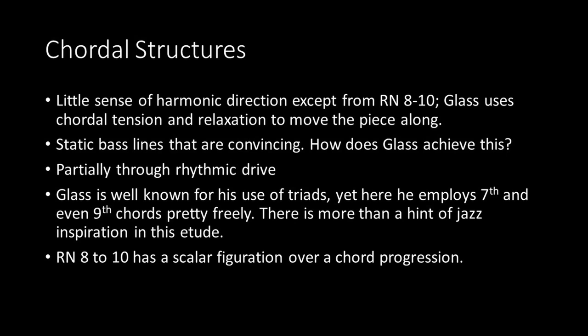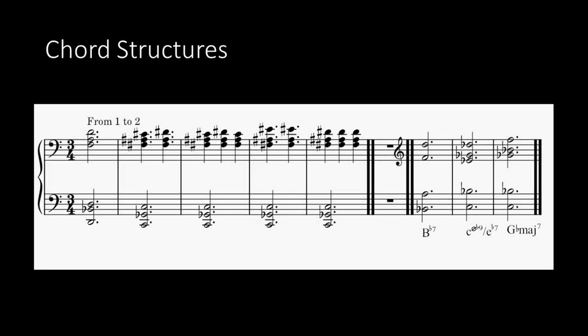He uses static bass lines convincingly, and how does Glass achieve this? He does so through rhythmic drive, which Glass as well as other minimalists are well known for. Glass is also well known for his use of triads, yet here he employs seventh and even ninth chords pretty freely. There is more than a hint of jazz inspiration in this etude in that regard. Let's look at rehearsal numbers one through four, where he uses a variety of chords: B-flat major seventh, C-diminished chord with a flat nine, and G-flat major seventh, which of course is a tritone from the C. Let's take a listen to these progressions.